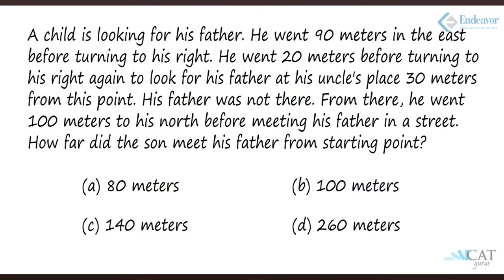A very simple problem — not really an aptitude challenge, just a practical exercise. Moving to Example 2: A child is looking for his father. He went 90 meters east, then turned right (90 degrees) and went 20 meters, then turned right again to look for his father at his uncle's place 30 meters from that point. Effective movement so far: 90 meters, then 20 meters, then 30 meters — reaching the uncle's place.